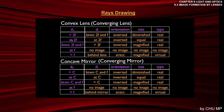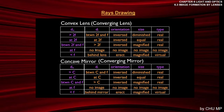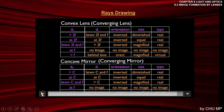For example, when the object is at 2F, the image is at 2F — inverted, same size, real. For the concave mirror, when the object is at C, the image is at C — inverted, same size, real. When the object is at F, there is no image — same for both. So you don't have to memorize 10 different sets of answers. If you know the pattern for one, you know the pattern for the other, because the answers are exactly the same.